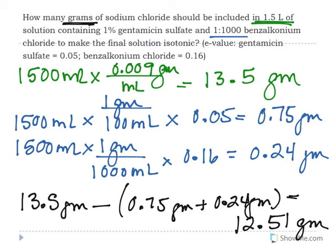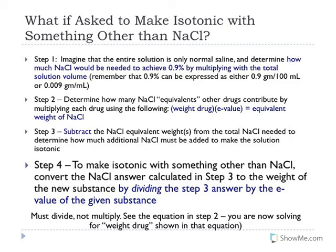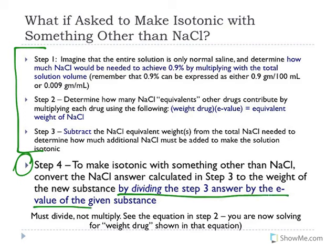Sometimes NAPLEX or compounding problems ask you to make a solution isotonic with something other than sodium chloride — boric acid is the most common. Steps one through three do not change. You just add a step four: take the grams of sodium chloride calculated in step three and divide by the E-value of the alternative agent (e.g., boric acid). You divide — not multiply — because in step three you solved for the weight of NaCl, and now you're solving for the weight of the other drug.